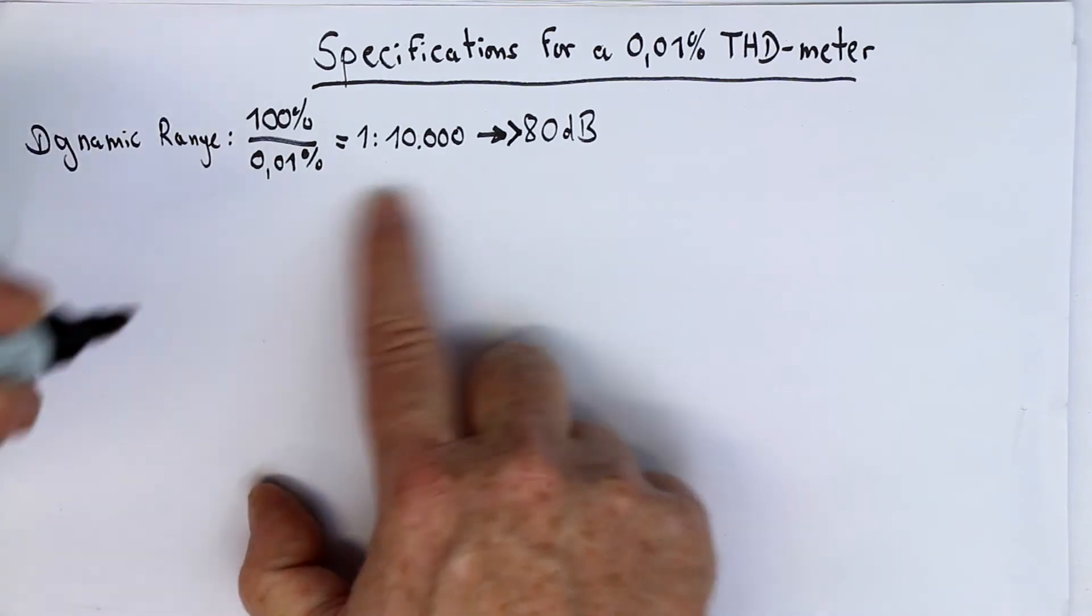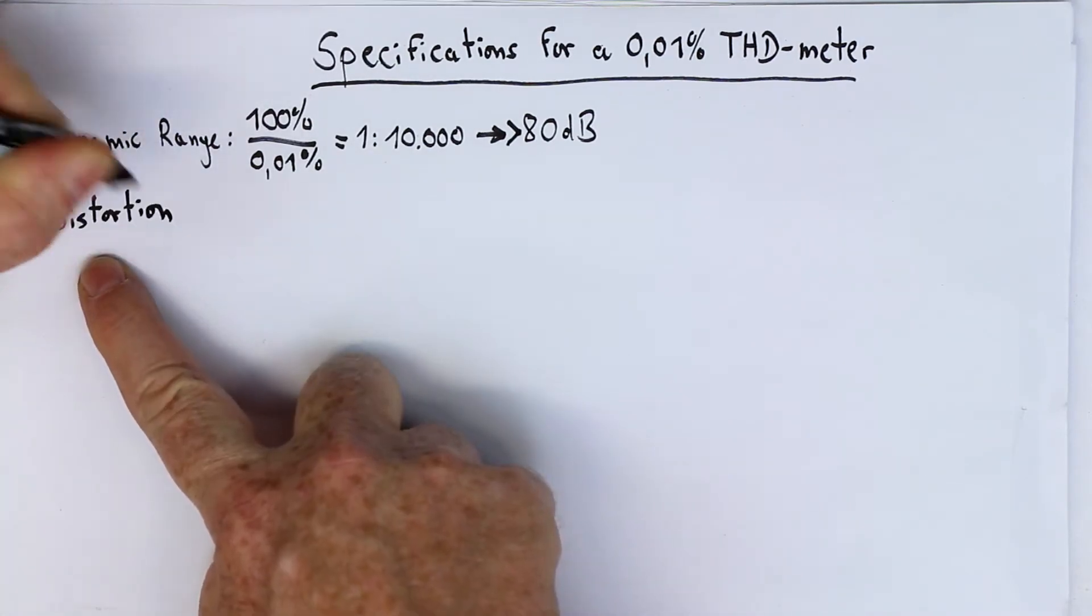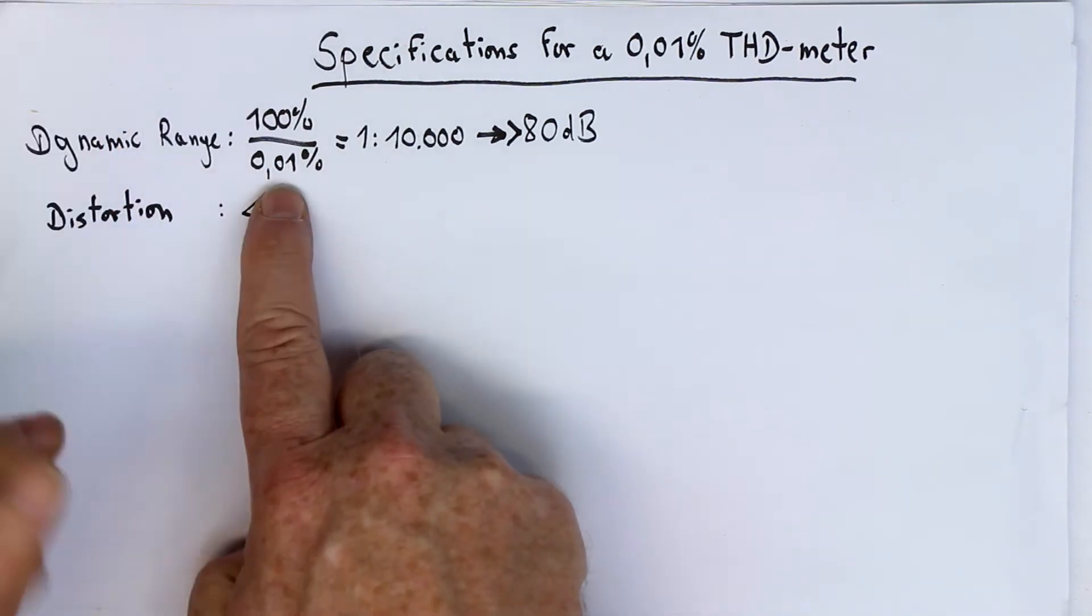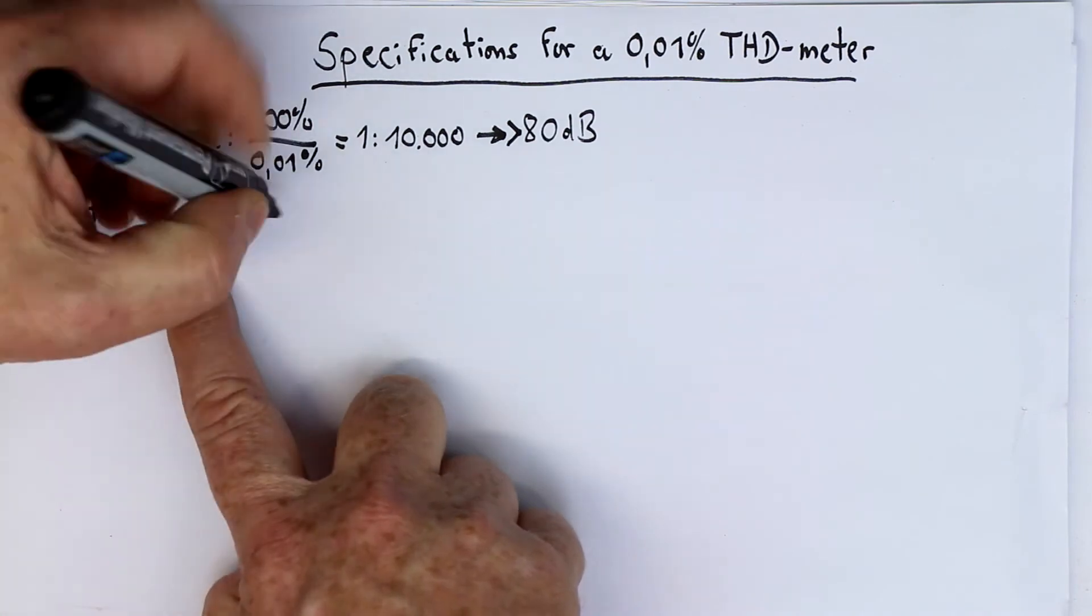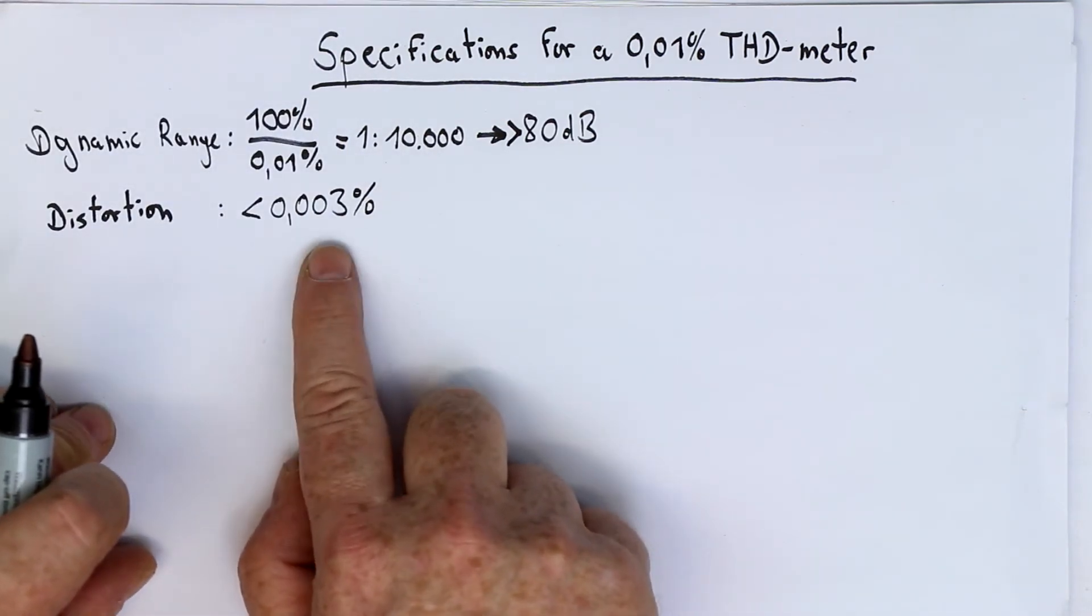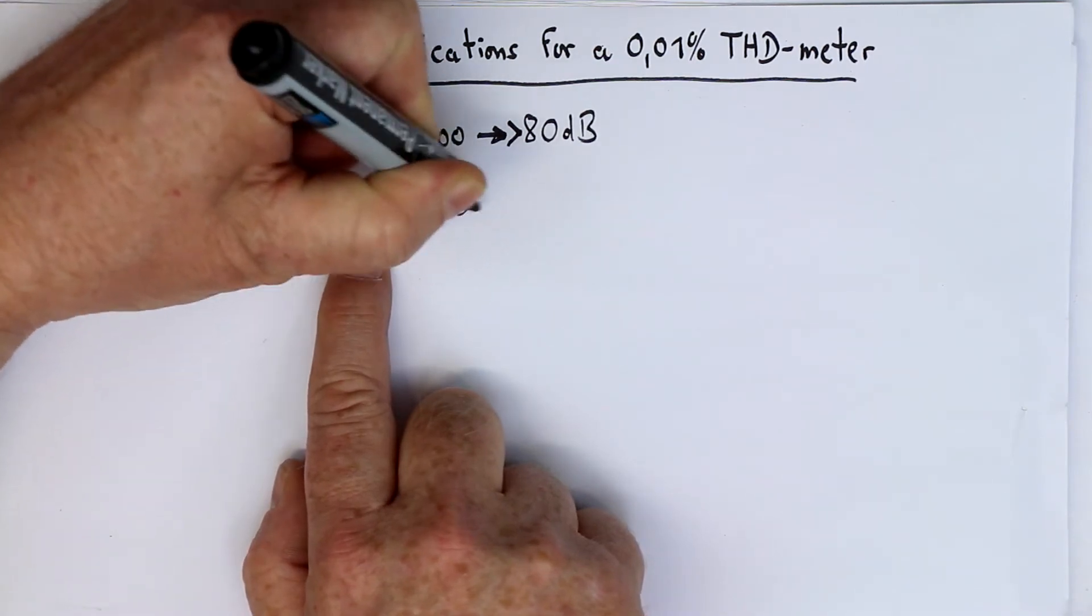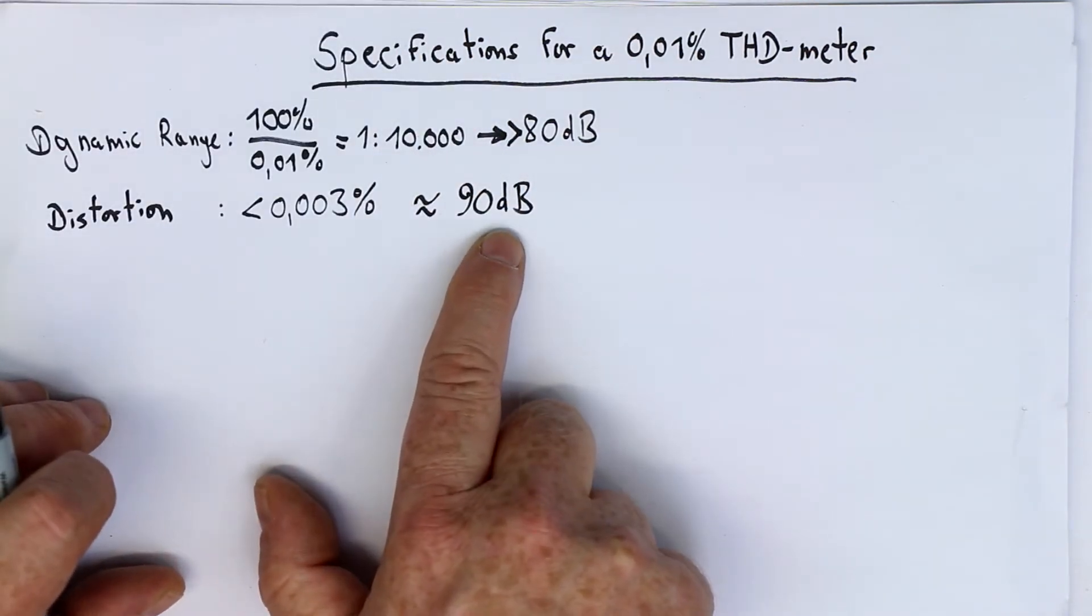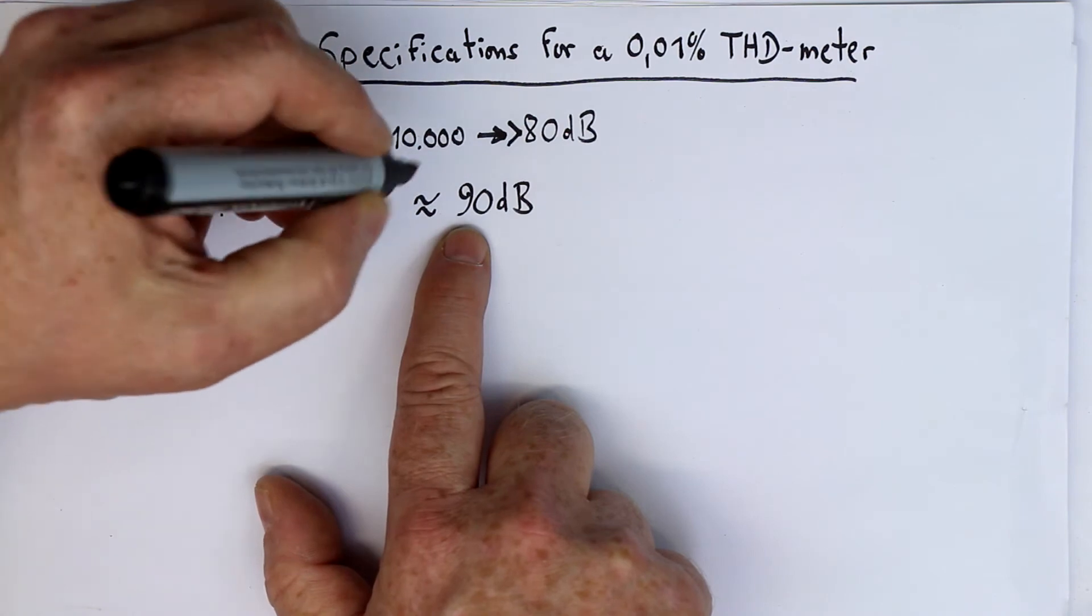The distortion from our op-amps should be much less than the least significant digit, so at least three times better. That's not only for a single op-amp, that's for the whole chain of op-amps. This translates to around 90 dB. All the harmonics from the op-amp should be less than 90 dB below the fundamental tone.